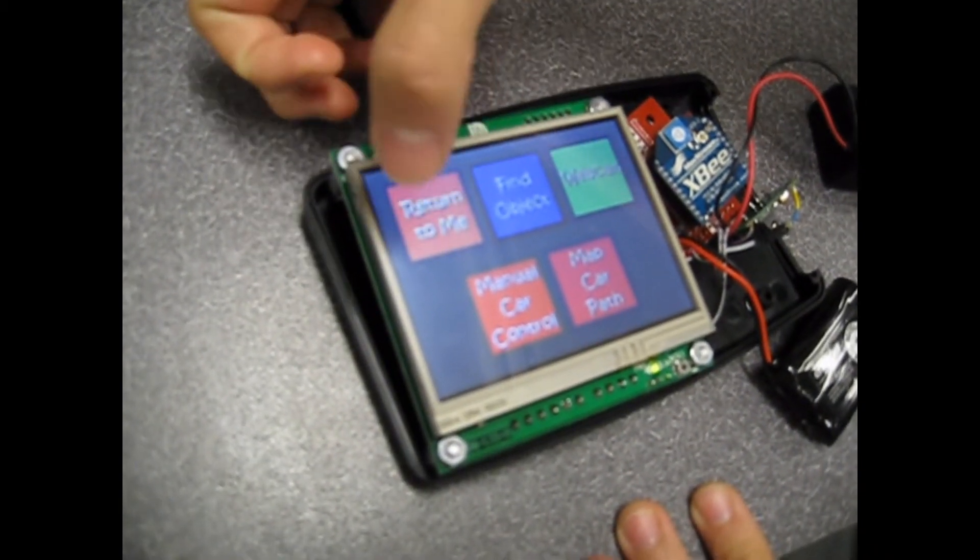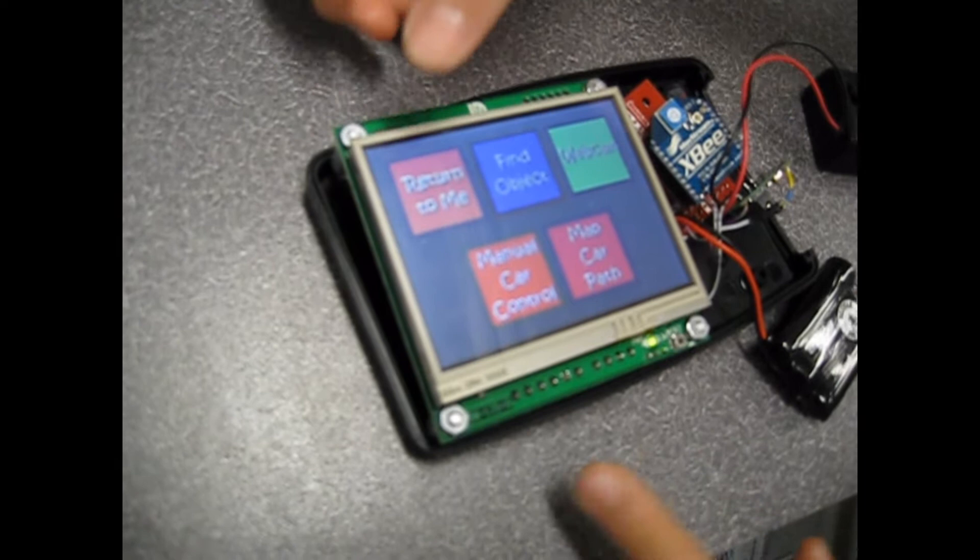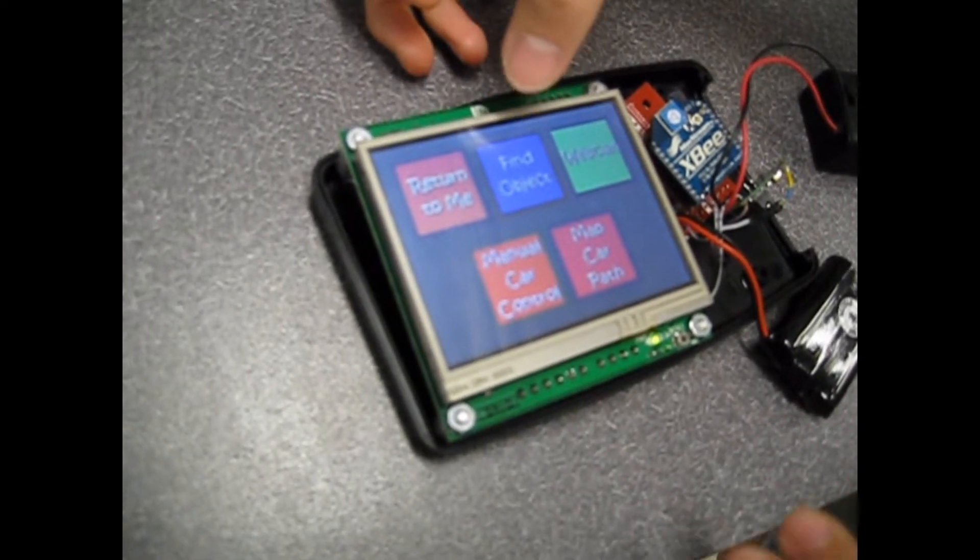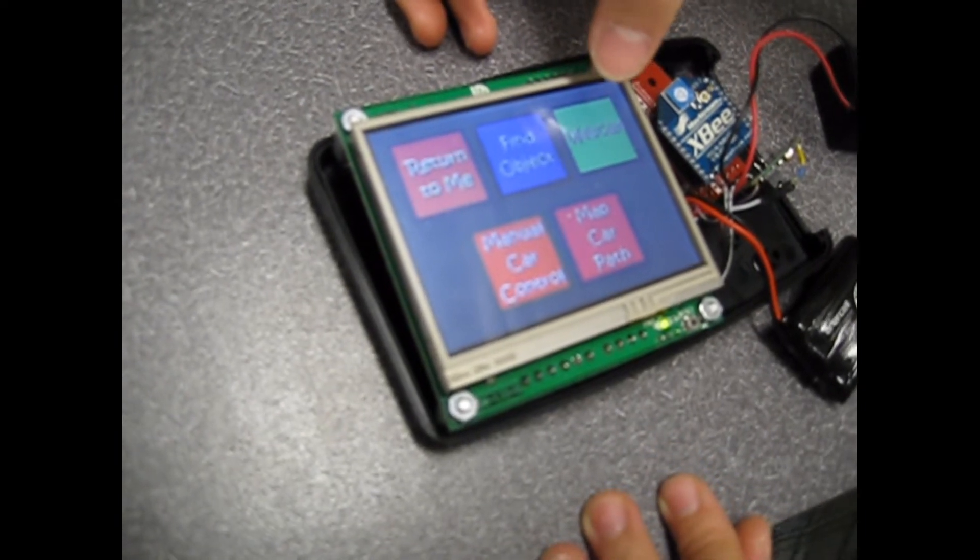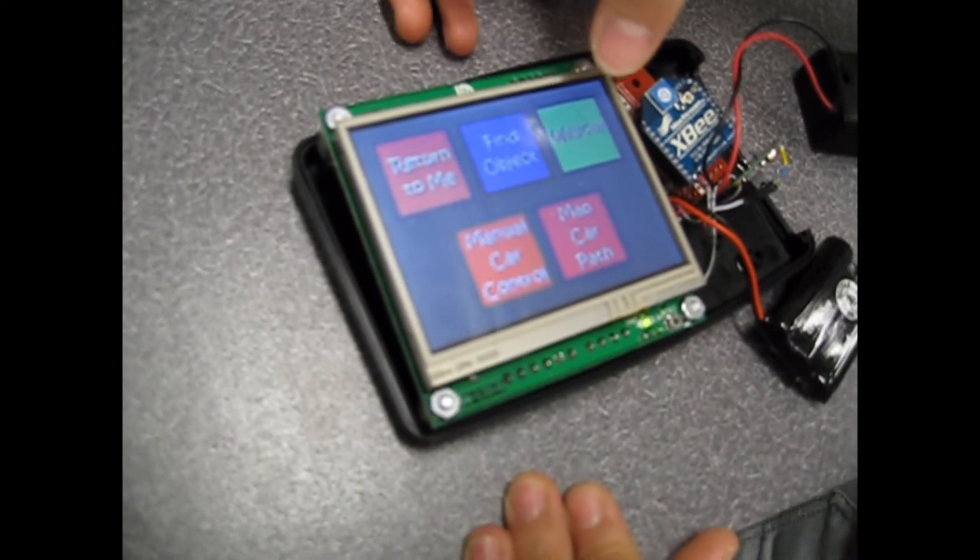When you hit Return to Me, the car will return to the controller. When you hit Find Object, the car will navigate to a transmitter. When you hit Webcam, the car will take a picture with its webcam and send the image back to the controller.